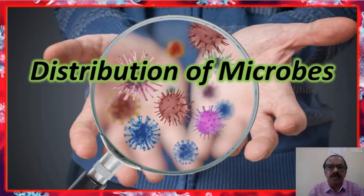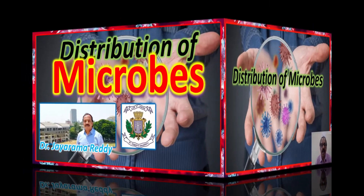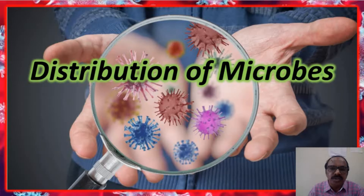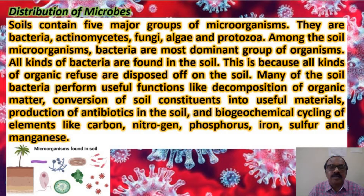Welcome back to this new video on distribution of microbes. In the previous video we learned about the diversity of microbes, and in this video let us see where all these microbes are distributed. By and large, microbes are considered to be ubiquitous — they are found everywhere on earth, and wherever life is possible, we find microbes.